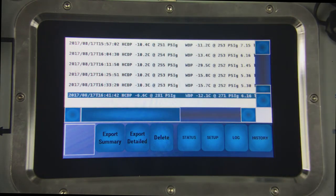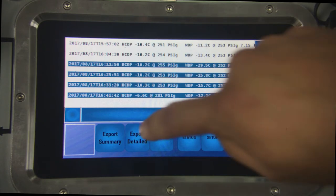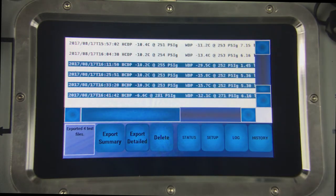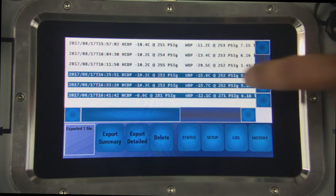To export a test file or files, insert a USB thumb drive into the USB port on the instrument panel. Highlight your selections by pressing them on the screen and then press the export detailed button to export the files for each measurement cycle. You will see a message in the bottom left of the screen indicating the number of files that have been exported to the USB. Pressing the export summary button will allow you to download the summary of the history page. You may also delete test files from the history page by selecting the test files and pressing the delete button.